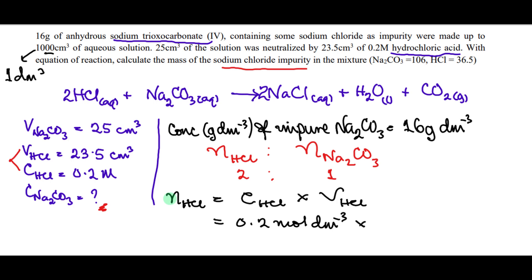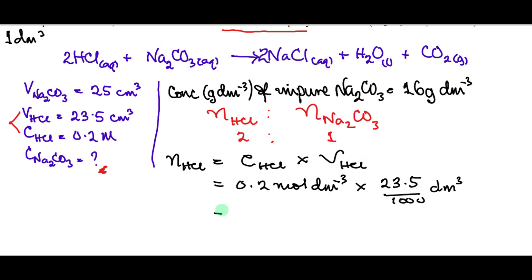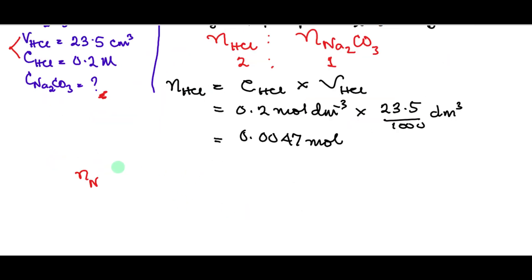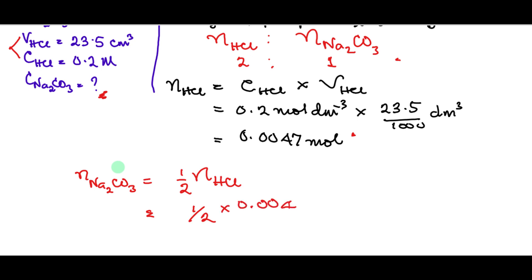n(HCl) = 0.2 × (23.5/1000) dm³ = 0.0047 mol. From the mole ratio of 2:1 (HCl:Na₂CO₃), the moles of Na₂CO₃ that reacted = ½ × 0.0047 = 0.00235 mol.